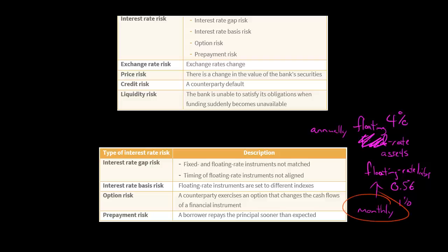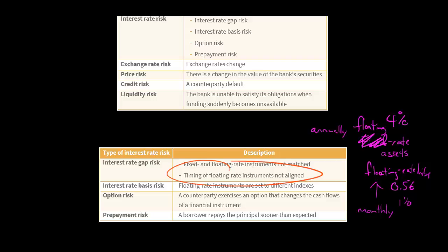Yes, but the liabilities reset monthly while the assets reset annually — 12 times a year for liabilities versus just once a year for assets. So the liabilities are going to reset faster. If rates go up, the interest rate on the liabilities will climb faster than the interest rate on the floating rate assets. So whether we have fixed versus floating, or both floating but with a timing mismatch in resetting, we can be exposed to interest rate gap risk, where a change in interest rates can have an adverse impact on the bank's net interest income.